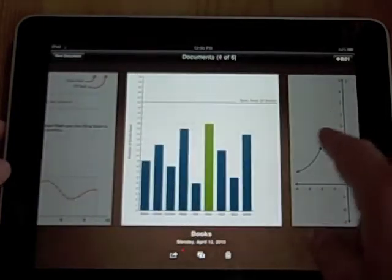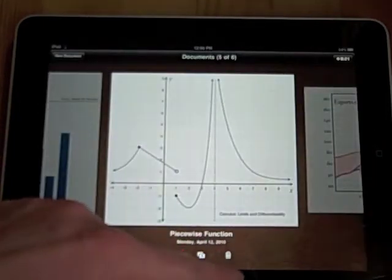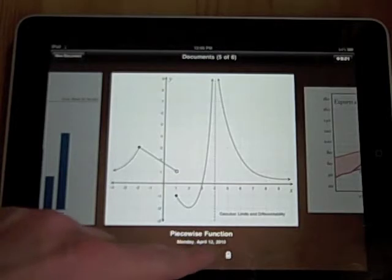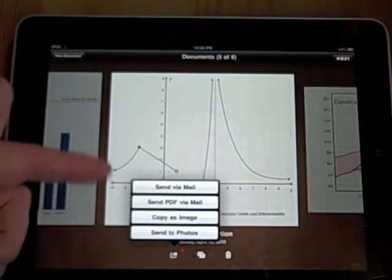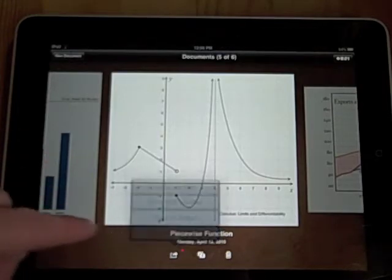I can easily scroll through, very smooth. I have the familiar Delete, New, and Duplicate document, as well as Send via Email, Send as PDFs, Send to Photos, very familiar options.